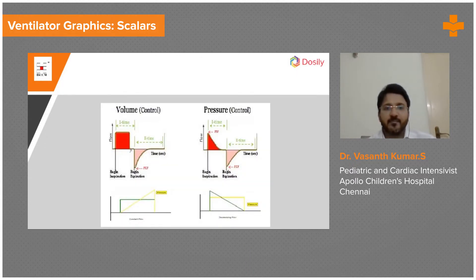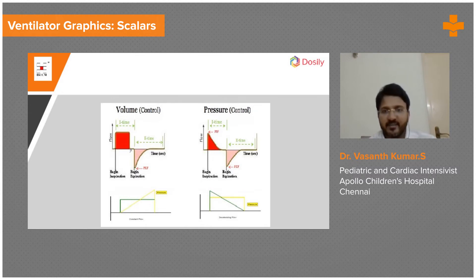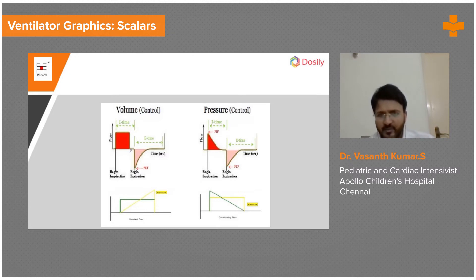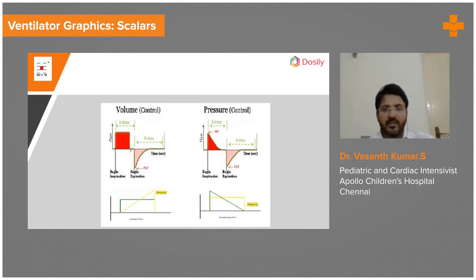In volume mode, the flow is always constant — this is a flow-time scalar in volume control mode. If the flow in the flow-time scalar is decelerating, that always means pressure control mode. So: constant flow in a flow-time scalar means volume control mode; decelerating flow means pressure control mode.